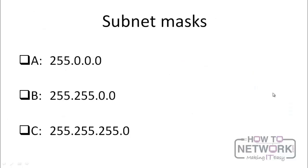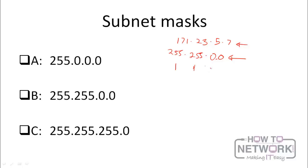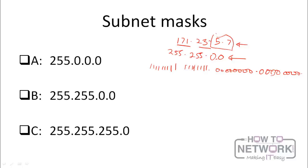So the practical classes you'll deal with day-to-day are class A, B, and C. Now, what is a subnet mask? When you have an IP address, the subnet mask tells it what network it's on. For instance, with IP address 171.23.5.7 and subnet mask 255.255.0.0 — both are 32-bit addresses. Wherever you have a 1 in the subnet mask that's part of the network; wherever you have a 0, it's part of the unique host address.